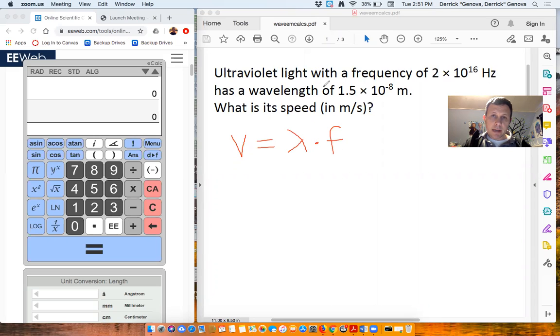So in this particular case I want to calculate the speed of ultraviolet light and I am given that the frequency is 2 times 10 to the 16 and I'm given that the wavelength is 1.5 times 10 to the negative 8. So I would write out f equals this number and I would write out lambda equals this number. So that would be how I would start.